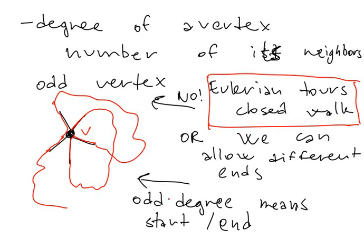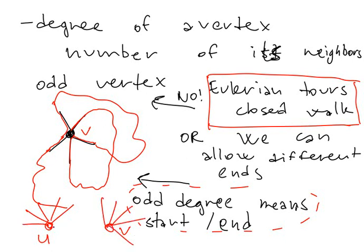And in the other case odd degree means start or end. It's quite easy to see that there cannot be more than two vertices of odd degree. But let me stay with this case of closed walk because we can easily reduce it from this. If we consider this case here, we have two vertices of odd degree. We have vertex u of odd degree and vertex v of odd degree. What we can do is to add an edge between them. So it will increase the degrees u and v by one.